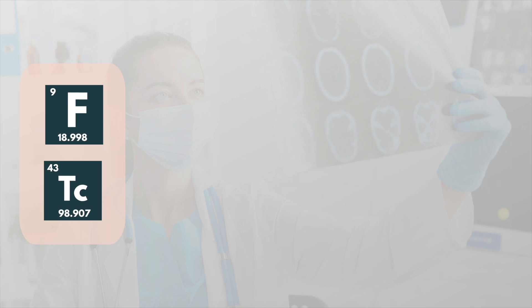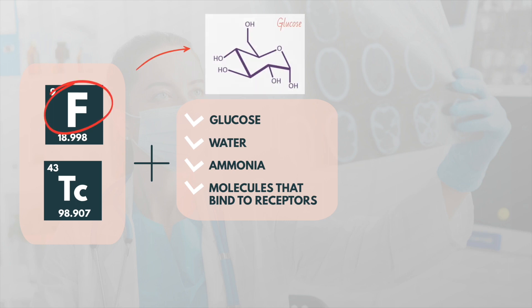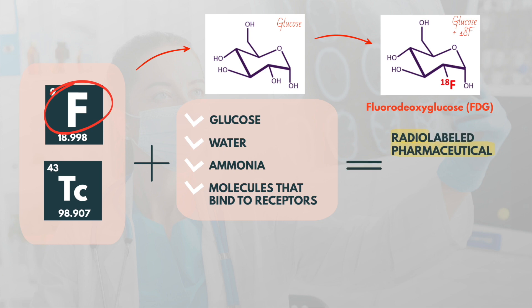These isotopes are then incorporated either into compounds normally used by the body, such as glucose, water or ammonia, or into molecules that bind to receptors. For example, when fluorine-18 is prepared, it is attached to a specific form of glucose. This forms fluorodeoxyglucose, a radio-labeled pharmaceutical, or in short, a radiopharmaceutical.